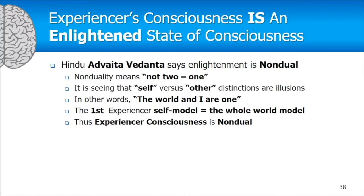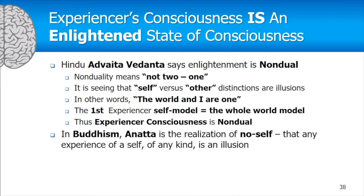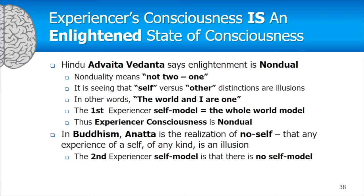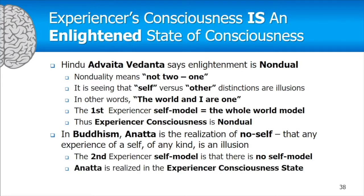In Buddhism, they talk about anatta — the realization that the self of any kind is an illusion; there is no self. The second experiencer self-model is that there is no self-model. Therefore, anatta is also realized in experiencer consciousness. More details on enlightenment are covered in other talks on YouTube; this is all that can be covered in 45 minutes.